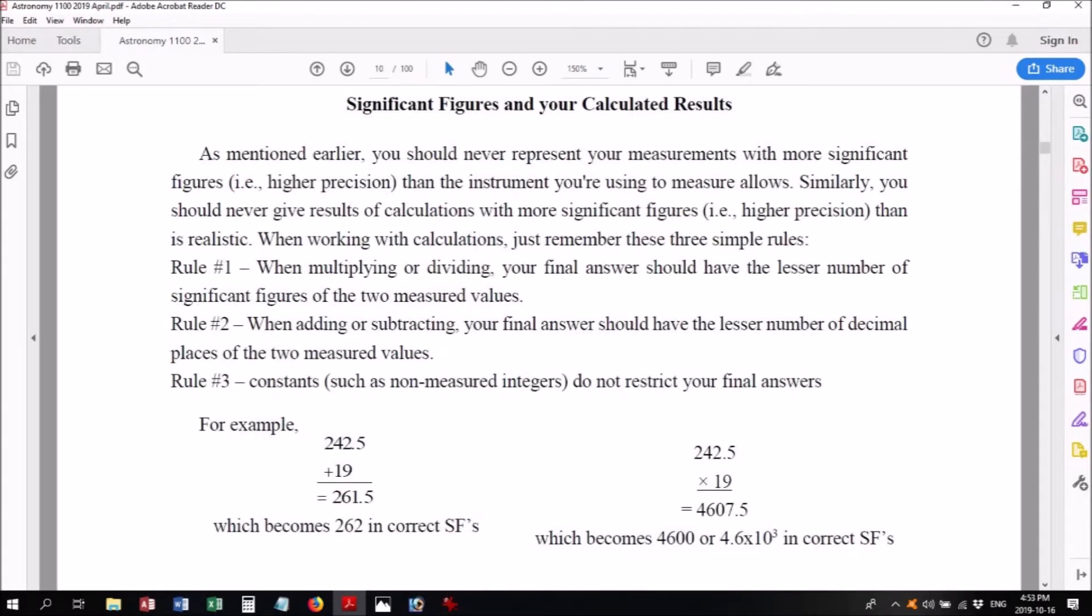When you do a calculation, sometimes your calculator gives you a whole bunch of digits, and the question is, how many of those should you round off? Because you don't want to lose information by rounding off too aggressively, but you also don't want to imply you had more precision in your experiment than you actually did by leaving too many digits there. So there are some rules for determining how many significant figures you should keep on your final answer when you do a calculation.